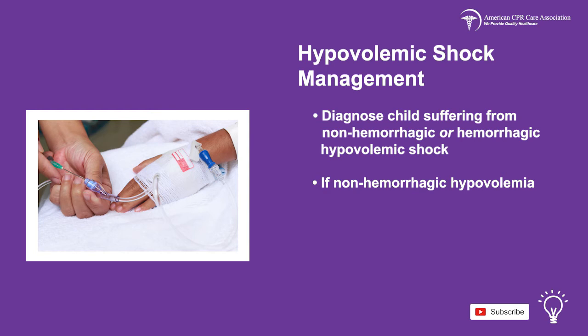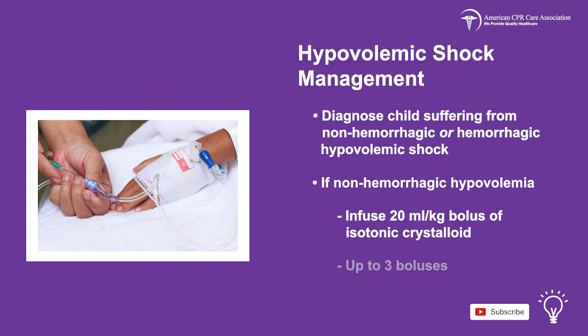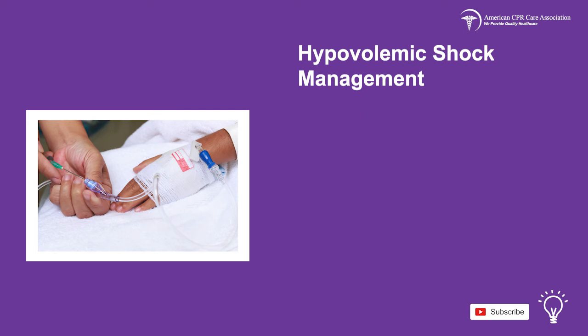To treat a child in non-hemorrhagic hypovolemic shock, an infusion of 12 ml per kg bolus of isotonic crystalloid is effective, with up to 3 boluses administered if the patient does not improve.